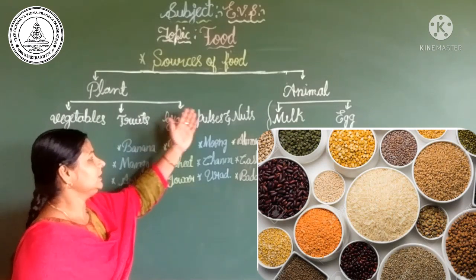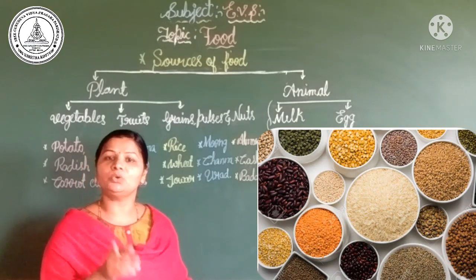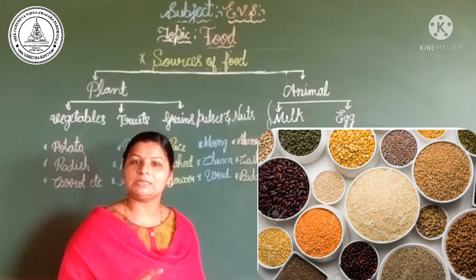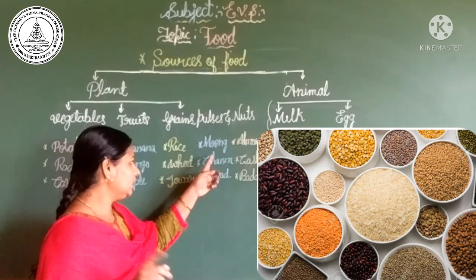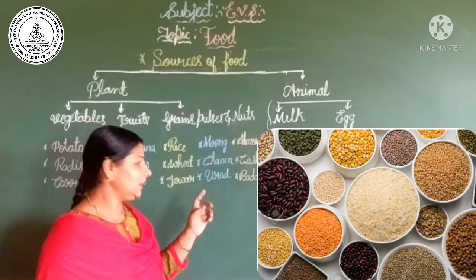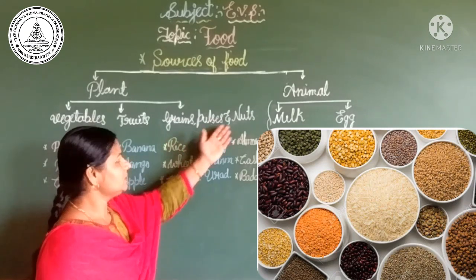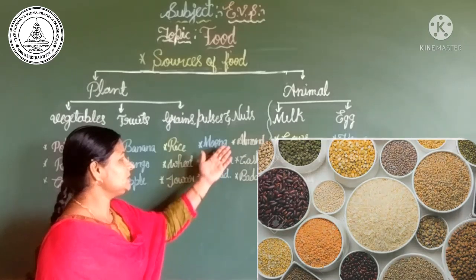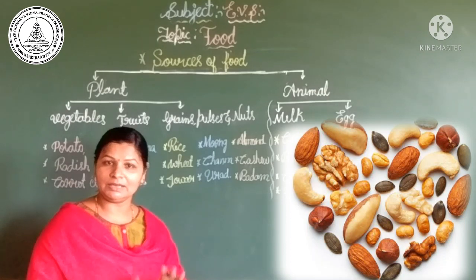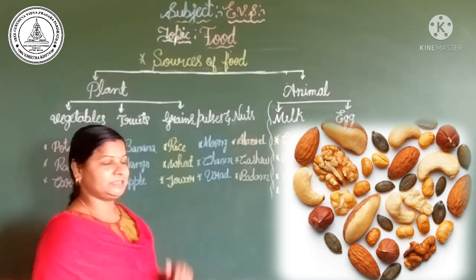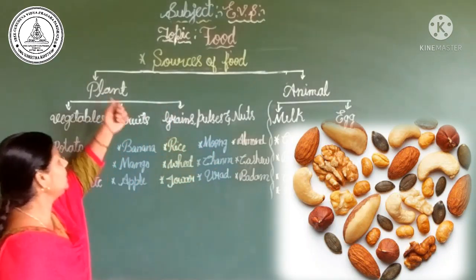Next, pulses — pulses are known as dals, children. For example, moong dal. Channa means kadlebele, curd means uddimbele. These are examples of pulses. Next, nuts — nuts include almond, cashew, badam — godambi and drakshi as we call them. These are known as nuts, children. All these food items we get from plants.